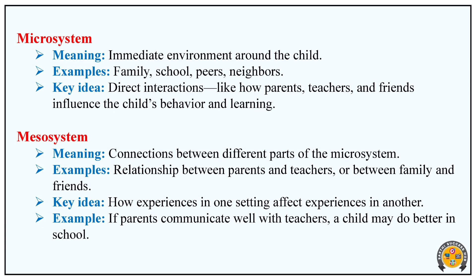First, the Micro System. Its meaning is the immediate environment around the child. For example: family, school, peers, and neighbors. This involves direct interactions — how parents, teachers, and friends influence the child's behavior and learning. If a child has a behavior or learning outcome, these direct interactions have influence.